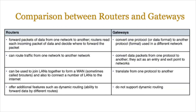An important comparison is between routers and gateways — you need to be aware of what each one does. Routers forward packets of data from one network to another, read each incoming packet to decide where to forward it, can route traffic from one network to another, join LANs to form a WAN, connect LANs to the internet, and offer additional features such as dynamic routing — the ability to forward data by different routes. Gateways convert one protocol to another, convert data packets between protocols, act as an entry and exit point to networks, and do not support any dynamic routing, which is one of the major differences between both.